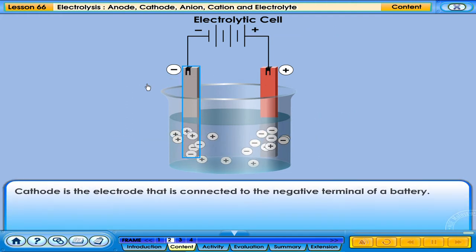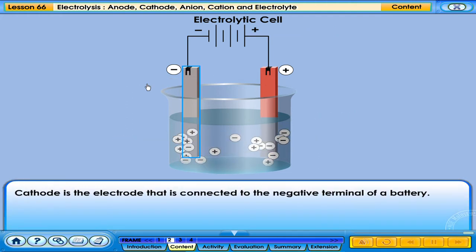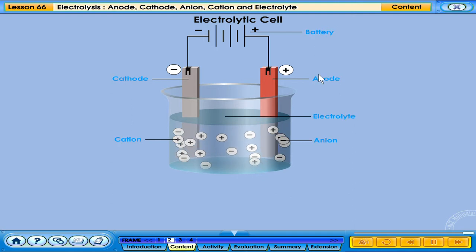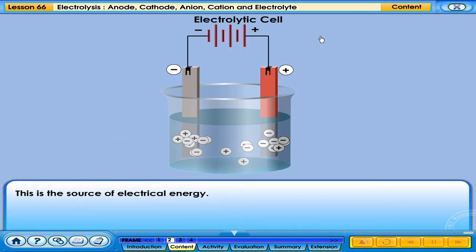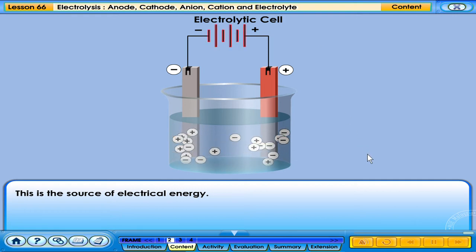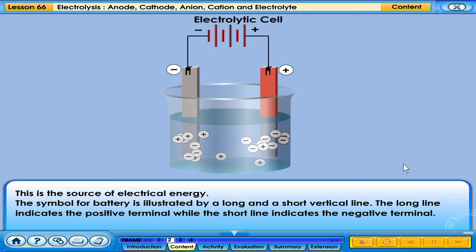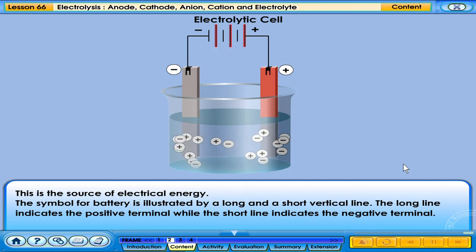Cathode is the electrode that is connected to the negative terminal of a battery. This is the source of electrical energy. The symbol for a battery is illustrated by a long and a short vertical line. The long line indicates the positive terminal, while the short line indicates the negative terminal.